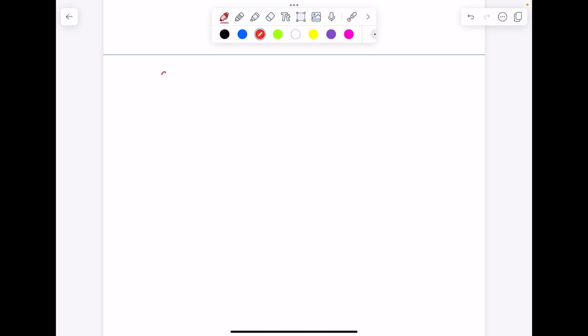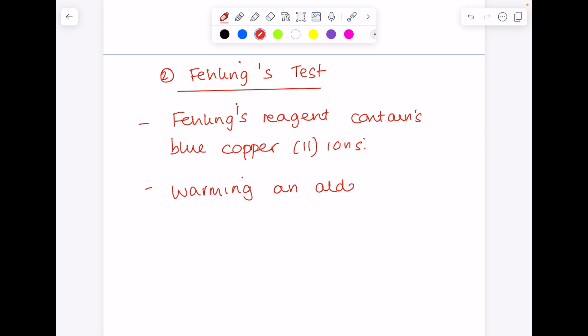The second test to prove that you have an aldehyde is Fehling's solution or Fehling's test. This time, the Fehling's reagent contains blue copper 2 ions. Upon warming, and I should have said before that you need to also warm the Tollens reagent, warming an aldehyde with Fehling's oxidizes the aldehyde to a carboxylic acid again.